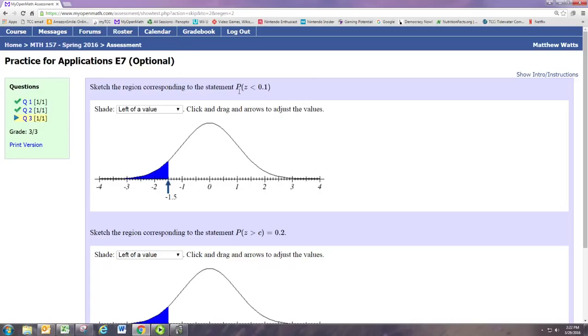We just want to have a graph that represents this expression which basically says what is the probability that the random variable is less than 0.1. So the arrow indicates where the value of the random variable is. If we put that at 0.1 then you can see that the blue shaded area, you need a left of a value. The area to the left is the values where z is less than 0.1. And that total area in blue is the probability that z is less than 0.1.